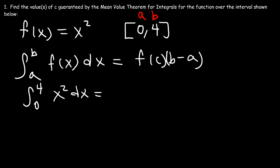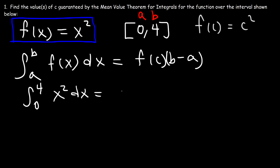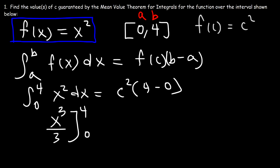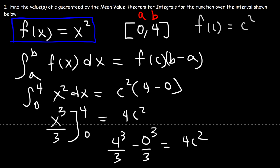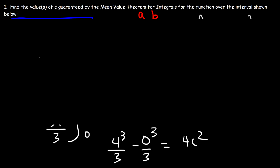f(C) — since f(x) is x squared, plugging in C gives f(C) = C squared. And B minus A is 4 minus 0. On the left, the antiderivative of x squared using the power rule is x cubed over 3, evaluated from 0 to 4. On the right, we have 4C squared. Plugging in 4 gives 4 cubed over 3, and plugging in 0 gives 0. Since 4 cubed is 64, we have 64 over 3.